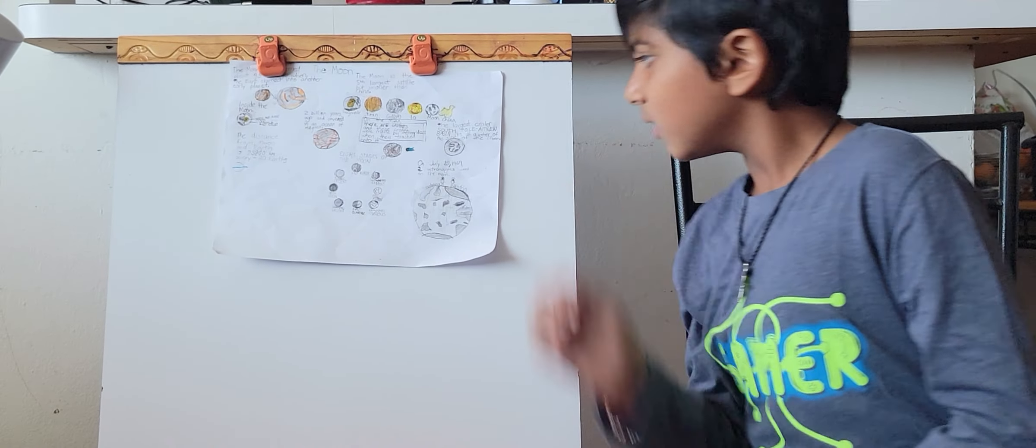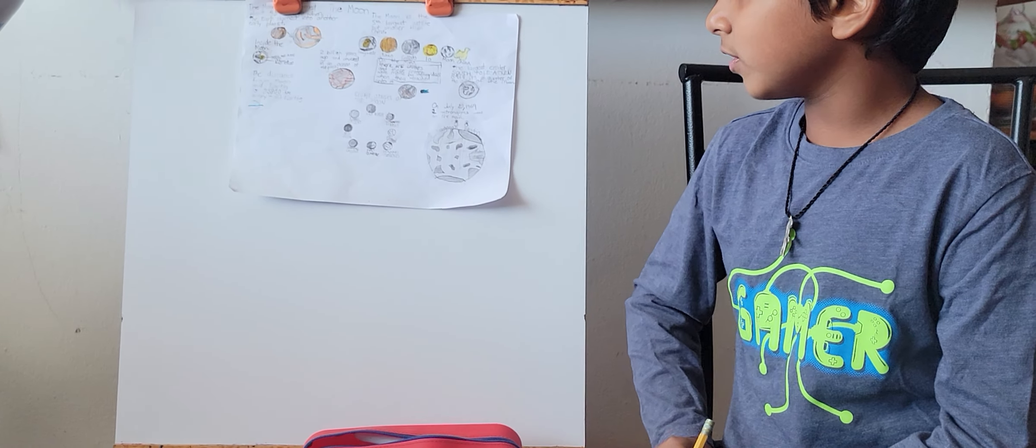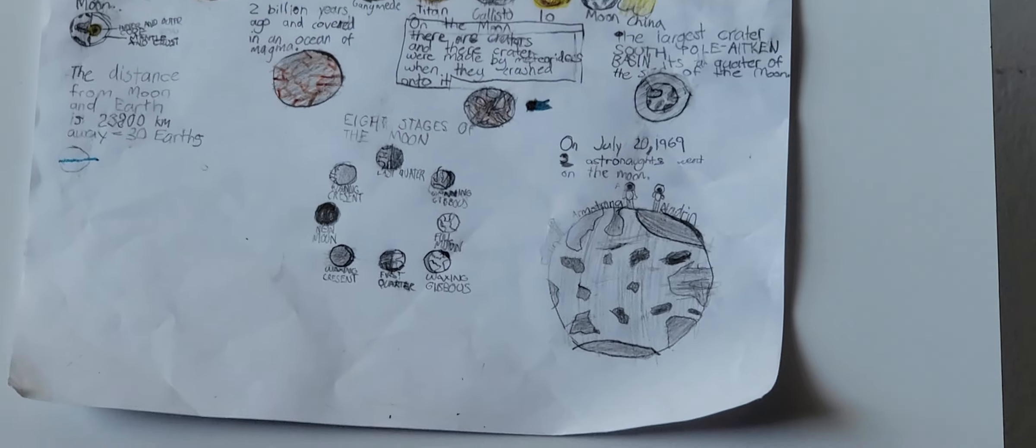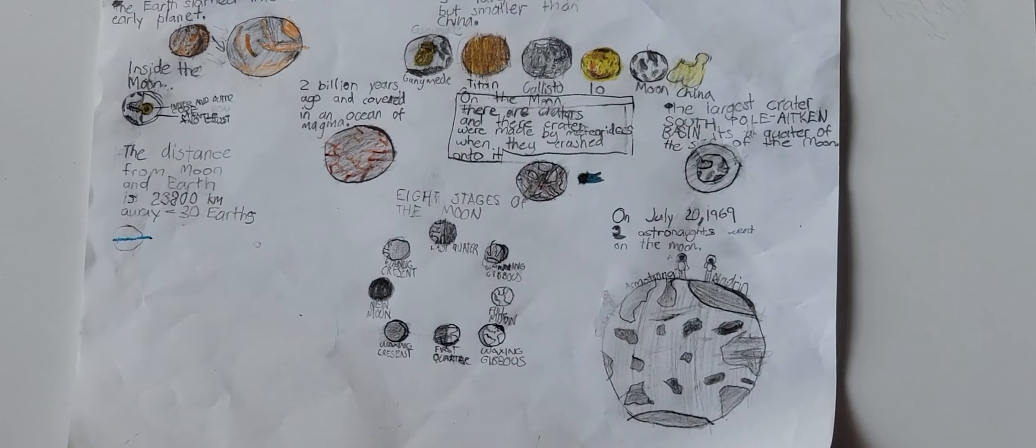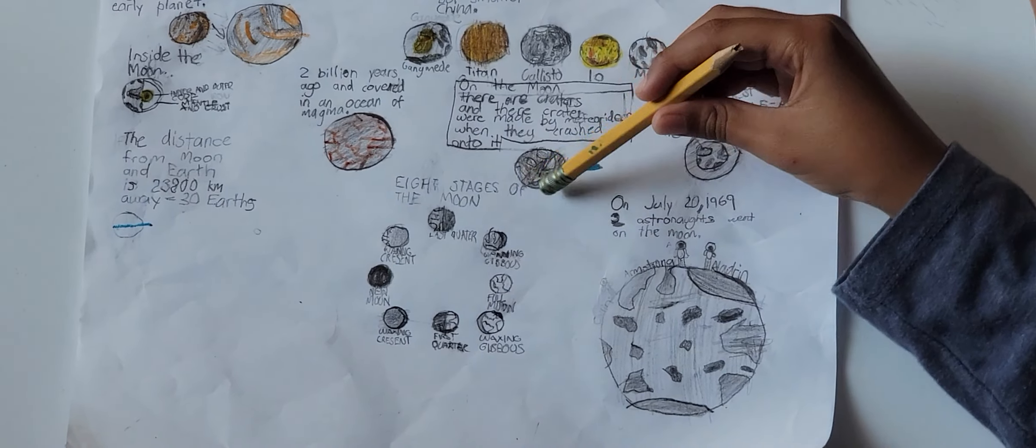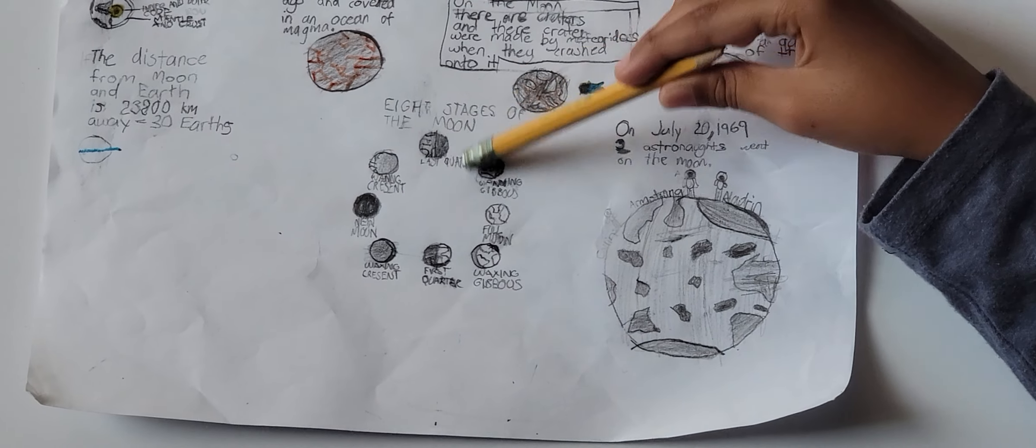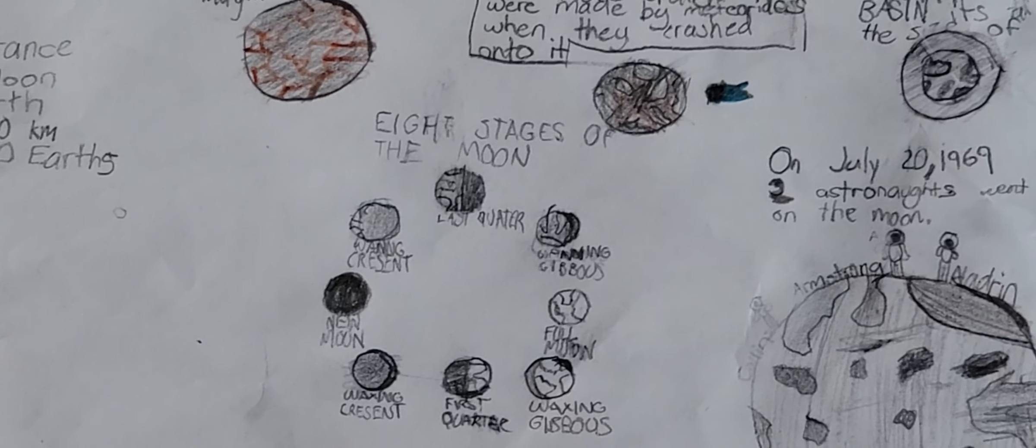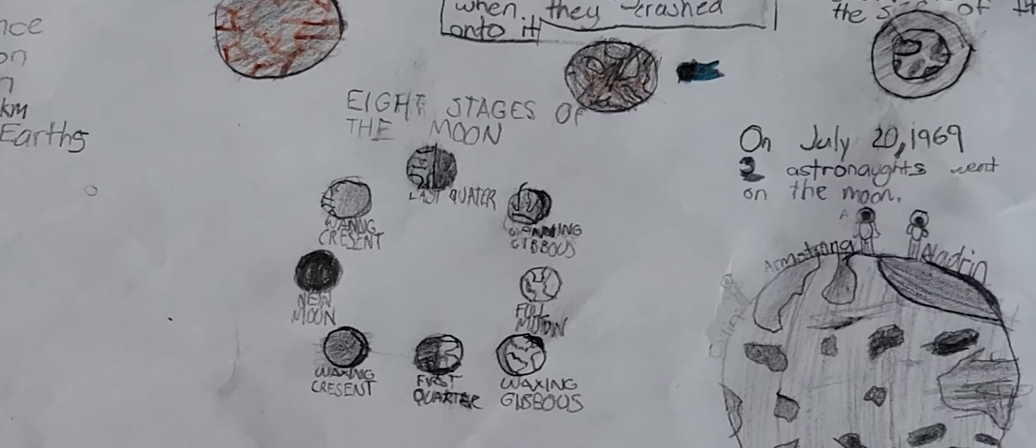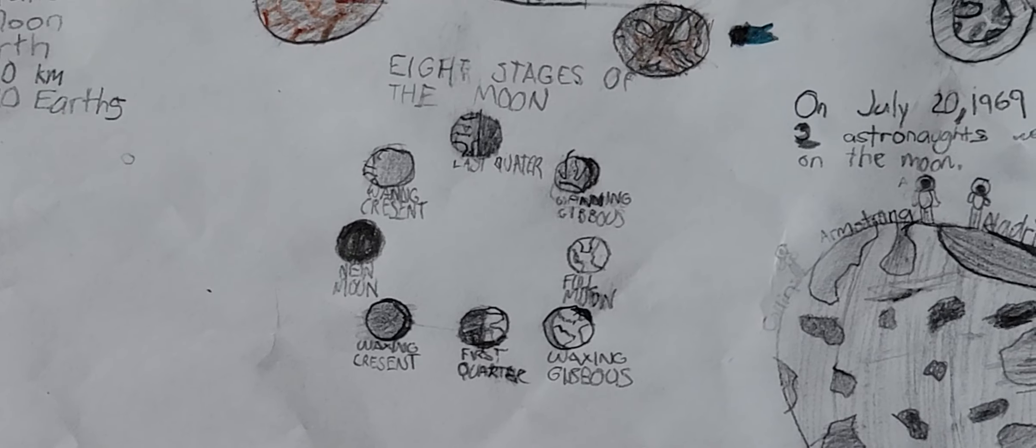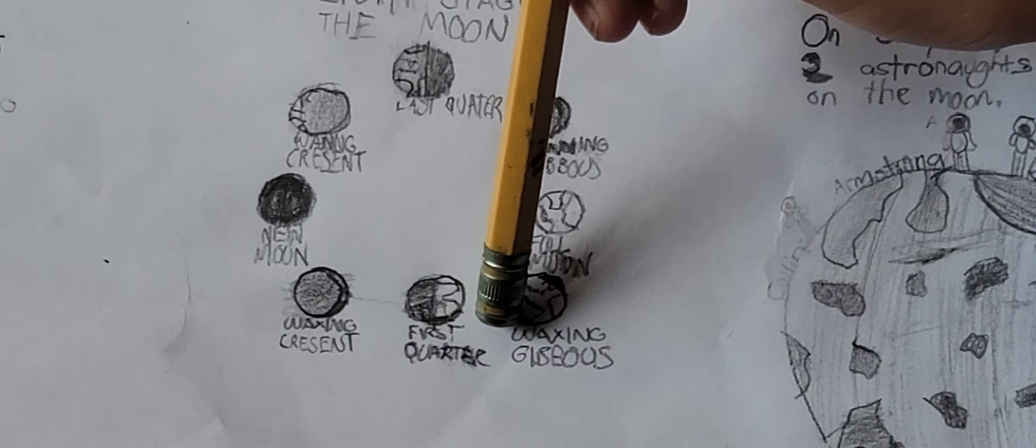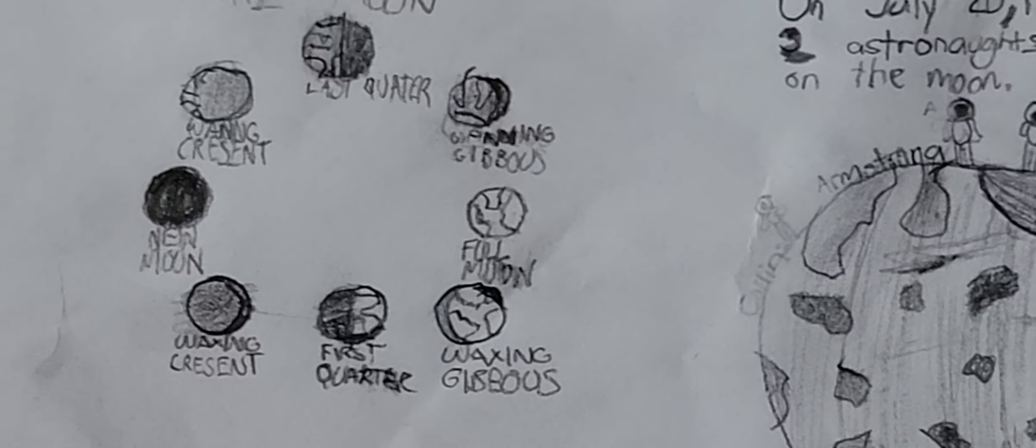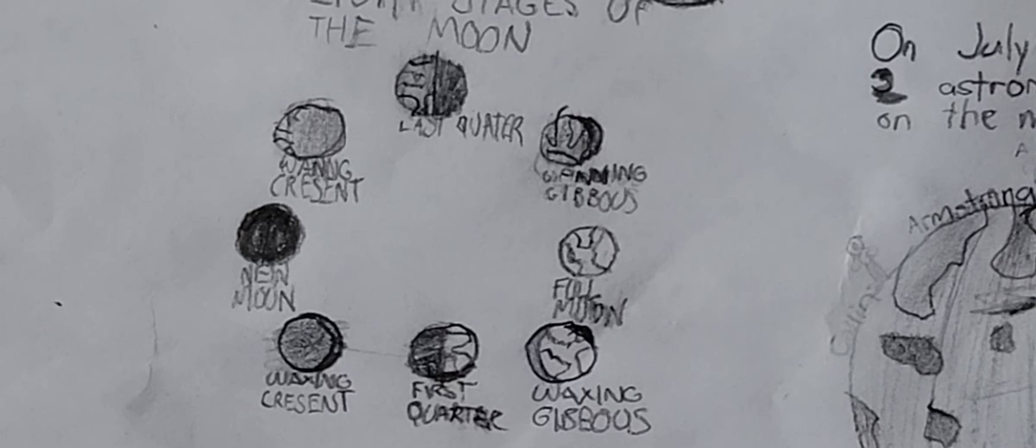So now we're going to talk about eight stages of the moon. The first stage is the full moon. The full moon has all of it, it's all white or gray in color. Then waning gibbous, last quarter, waning crescent, then the new moon. The new moon is the darkest phase of the moon. Then the waxing crescent, first quarter, and the waxing gibbous. You have to always keep that in your mind.